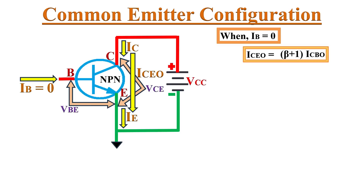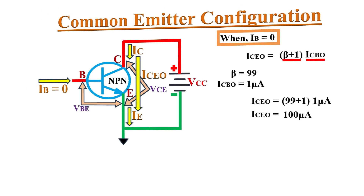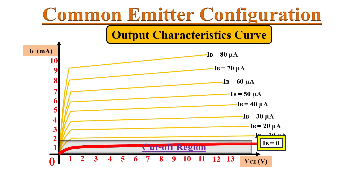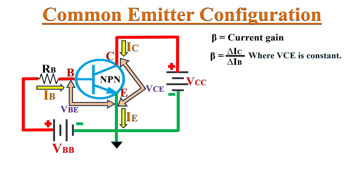During the active region of operation, input current IB gets amplified by the factor of beta, which is the current gain of this configuration. Beta equals the ratio of change in collector current delta IC to change in base current delta IB at a constant collector-emitter voltage VCE. The typical value of beta in common emitter configuration is in the range of 50 to 500, so we get high current gain in this configuration.